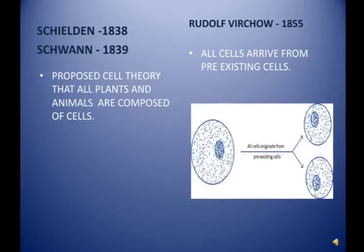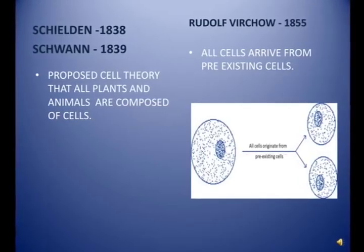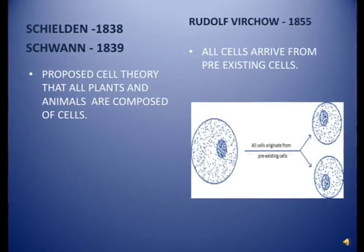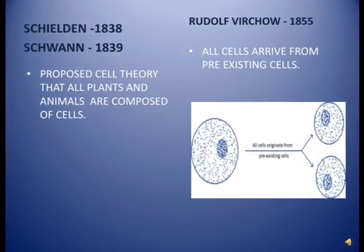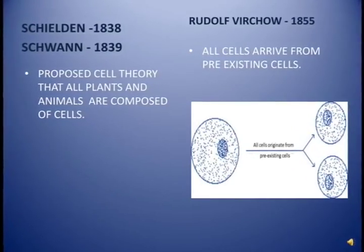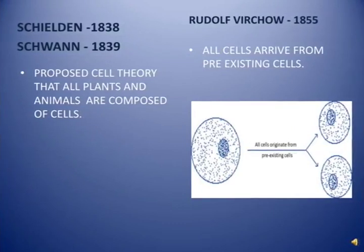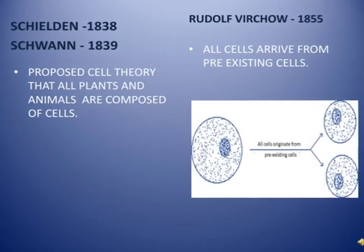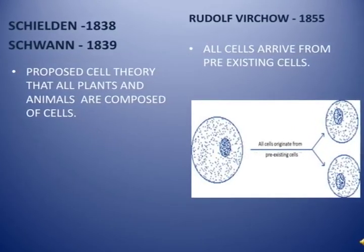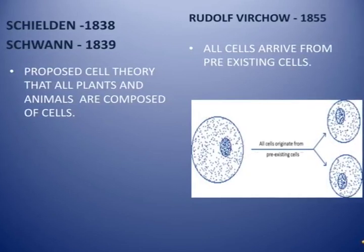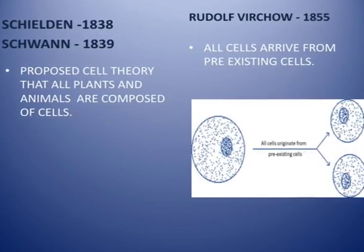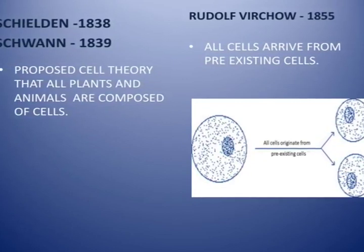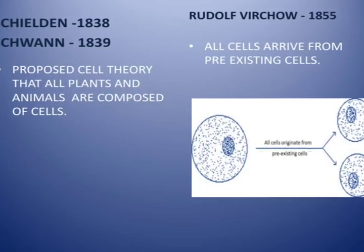Next, Schleiden in 1838 and Schwann in 1839 proposed the cell theory: that all plants and animals are composed of cells, meaning their bodies are made up of cells.